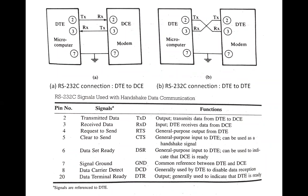The minimum interface between a computer and a peripheral requires three lines: pins 2, 3, and 7, as shown in the figures. These lines define the relationship relative to the DTE. The data terminal equipment transmits on pin 2 and receives on pin 3, while the DCE transmits on pin 3 and receives on pin 2.